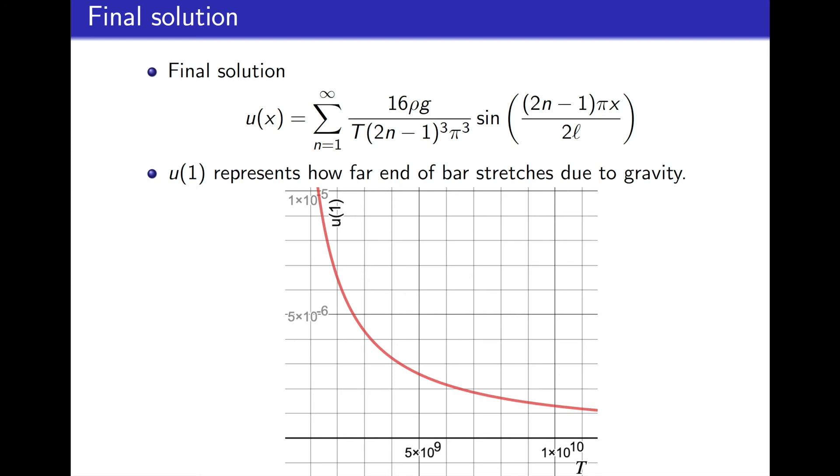This shows how the tip of the bar stretches as a function of the tension. We see that as the tension decreases, the bar is going to stretch more. So as we go to the left on the t-axis, we see that the bar is going to stretch more and more. Note that 5 times 10 to the minus 6, that's about 5 microns of stretch. So we're definitely talking about a piece of material that is not going to stretch a whole lot just due to gravity.